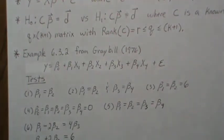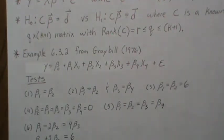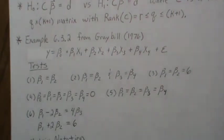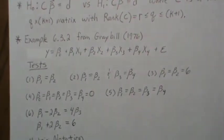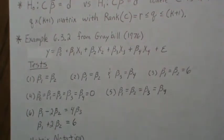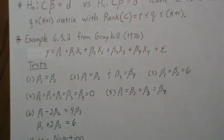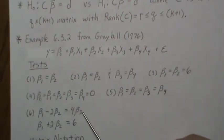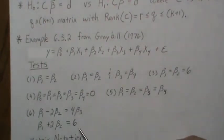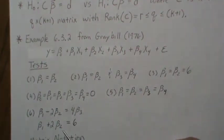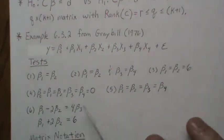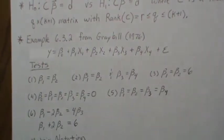In Test 5 we want to know: are beta_1, beta_2, beta_3, and beta_4 all equal — without postulating what they equal. In Test 6 there are two constraints: does beta_1 minus 2*beta_2 equal 4*beta_3, and does beta_1 plus 2*beta_2 equal 6? We will develop the C matrix for each of these tests.